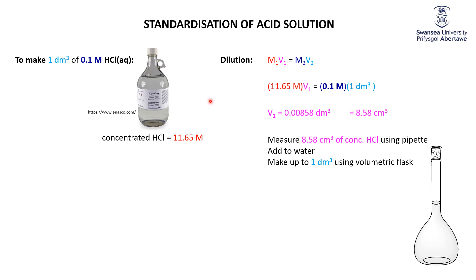Anyway, so that's how our technicians would have done it. As I said, probably tough for them to measure out 8.58 cubic centimeters. So therefore, we're not going to have exactly 0.1000 molar HCl.